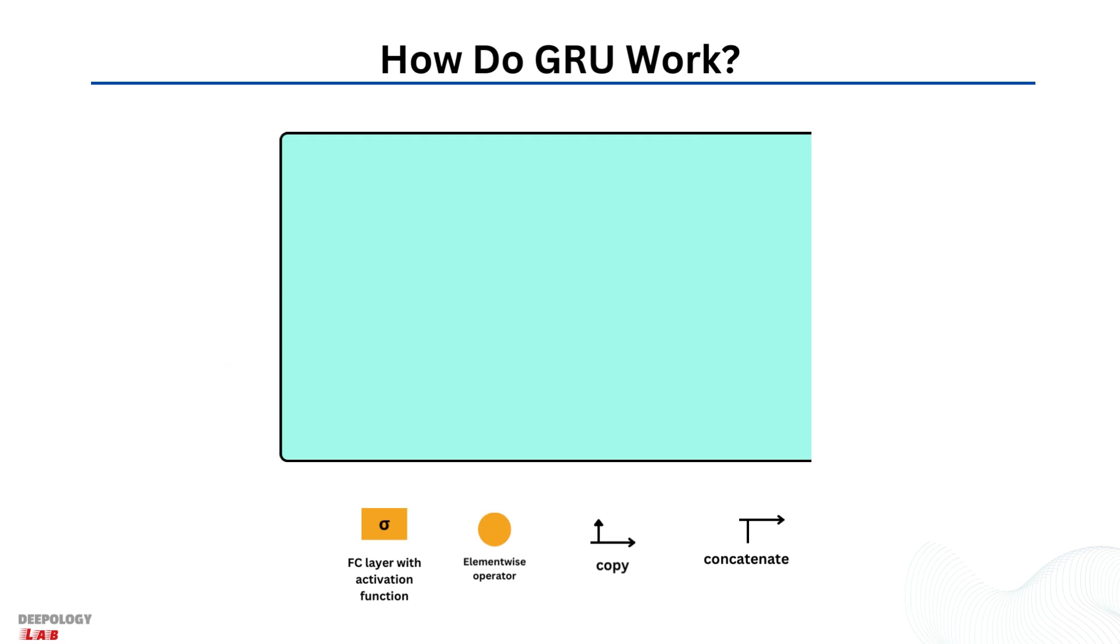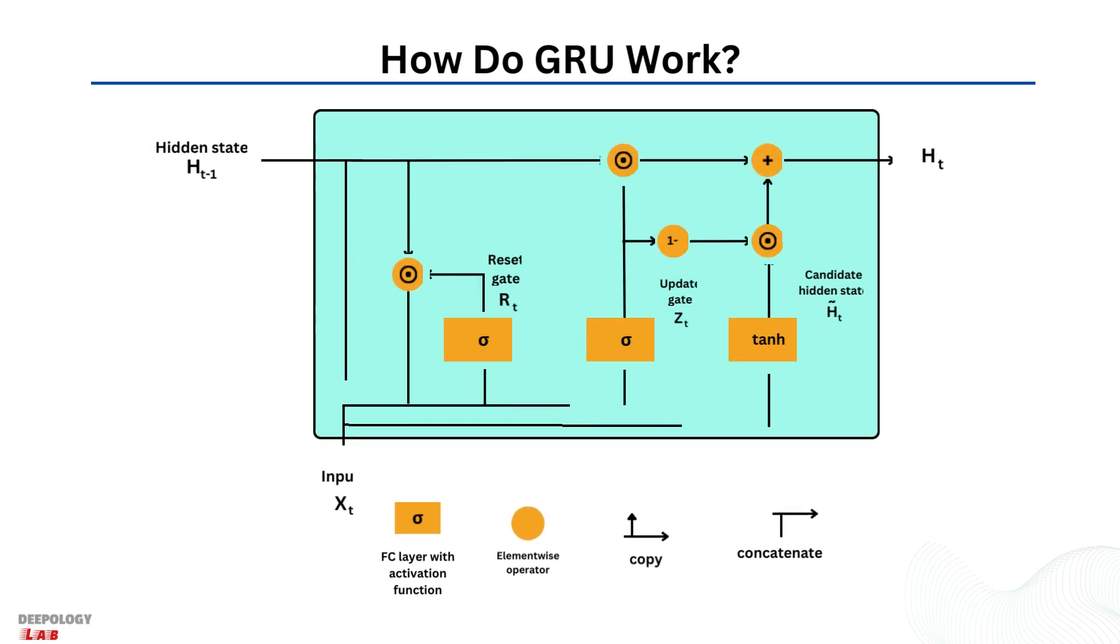To solve the vanishing gradient problem of a standard RNN, GRU uses so-called update gate and reset gate. Basically, these are two vectors which decide what information should be passed to the output.